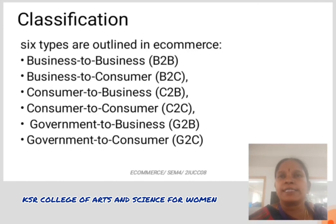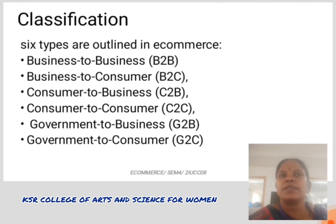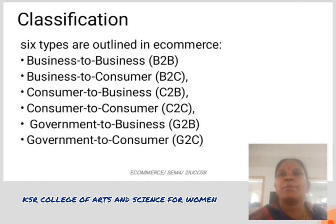Customer to business: a customer-to-business model is a type of commerce where the consumer or end user provides a product or service to an organization. Business to government: businesses and government agencies use central websites to exchange information and conduct business with each other more efficiently. Customer to government: consumer-to-government e-commerce helps consumers request information or post feedback regarding the public sector directly to government authorities or administration.